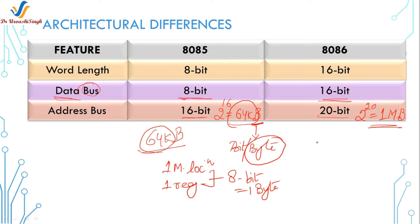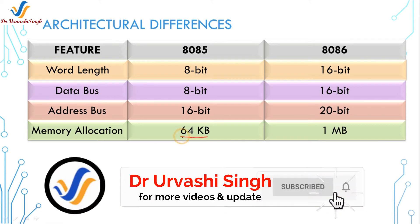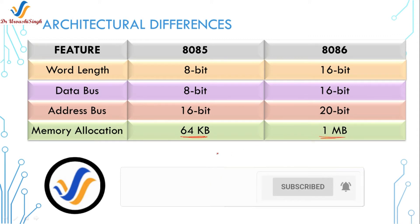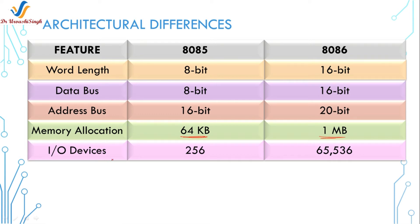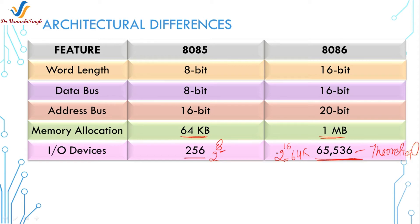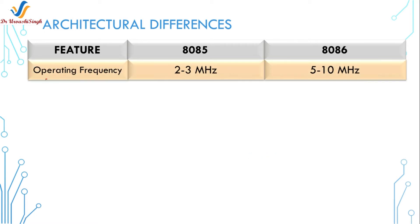So the memory size goes from 64 KB in 8085 to 1 MB in 8086 — the 8086 can be interfaced with a bigger memory. For memory allocation: 8085 can allocate 64 KB and 8086 can allocate 1 MB. For input/output devices, the 8085 can be interfaced with 256 devices, calculated from the 8-bit data bus size (2 to the power 8). In 8086 it is 2 to the power 16, which is 64K (exactly 65,536), though this number is theoretical and not practically achieved.